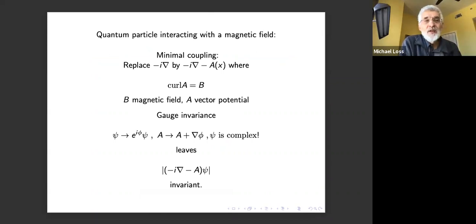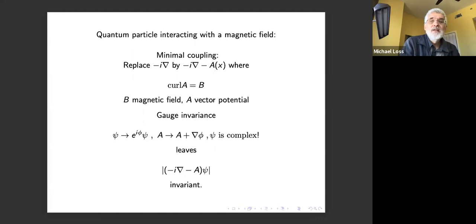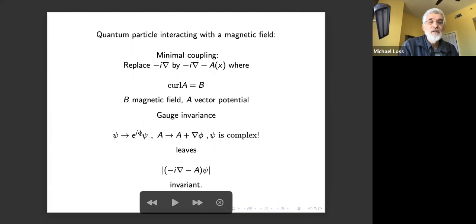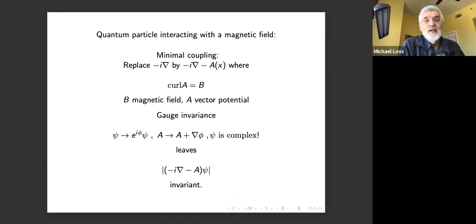I start with a lament. We talk about a quantum particle interacting with a magnetic field. We replace −i∇ by −i∇ − A, where curl(A) equals the given magnetic field. This has a gauge invariance: when you change ψ by a phase e^{iφ} and change A by A + ∇φ, the magnitude |(-i∇ − A)ψ| is invariant.